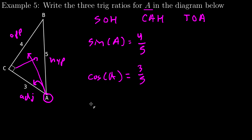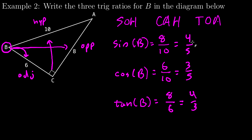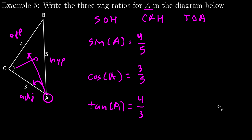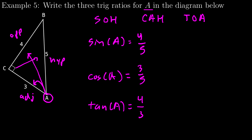Tangent of A: O for opposite is 4, A for adjacent is 3, so tangent of A equals 4 over 3. I do want to point out that these values were the same as the previous triangle's values, but that's a coincidence — that was just because this triangle was similar to that triangle. So don't think these always have to be the same numbers; they can be many different things.